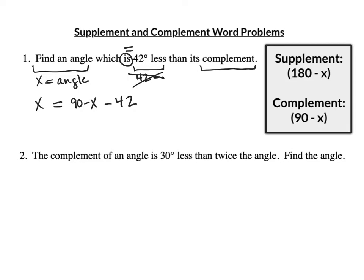There's nothing to distribute here, so you don't even need parentheses. What you would do then is combine like terms: x equals 90 minus 42. And I get 48. So this is 48 minus x.